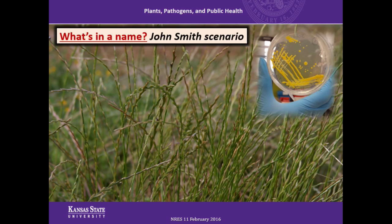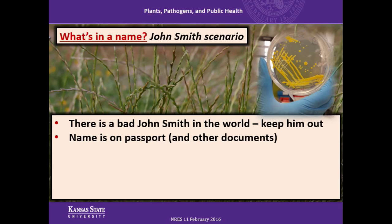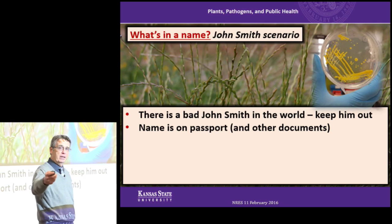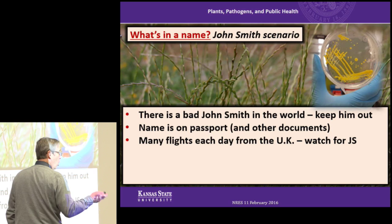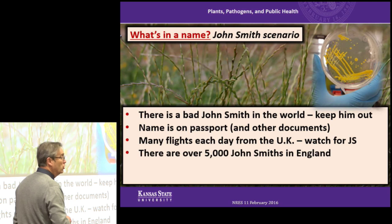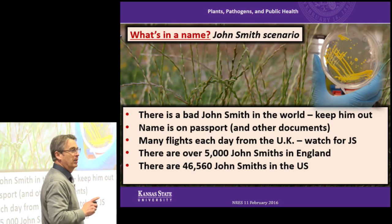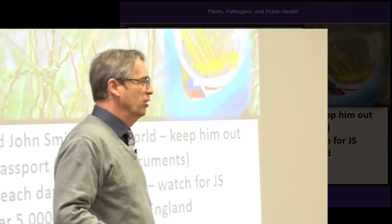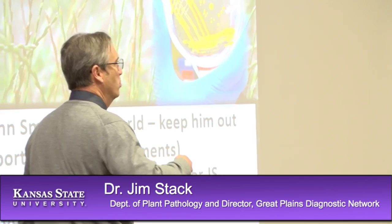What's in a name? I developed the John Smith scenario. There's a bad John Smith in the world and we want to keep John out of the United States. His name's going to be on his passport and identification documents, so when he tries to come into a port of entry, we will intercept him. However, there are over 5,000 John Smiths in England, and 46,560 John Smiths in the United States. So we already have a background population of John Smith. ID by name is not enough, yet that is what our regulations to protect plant systems are based on.